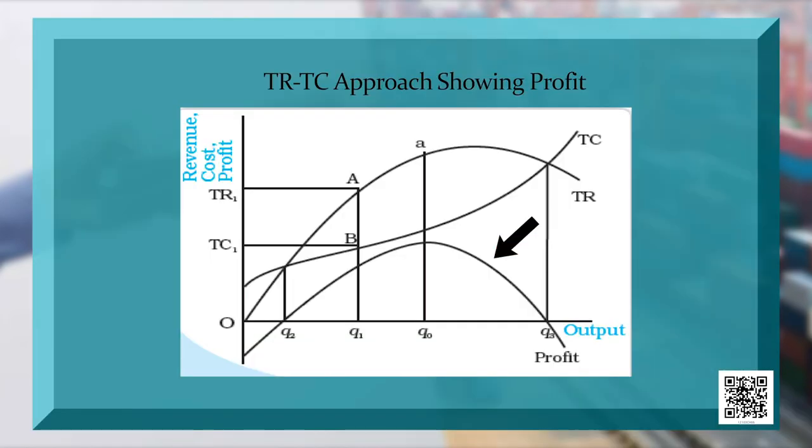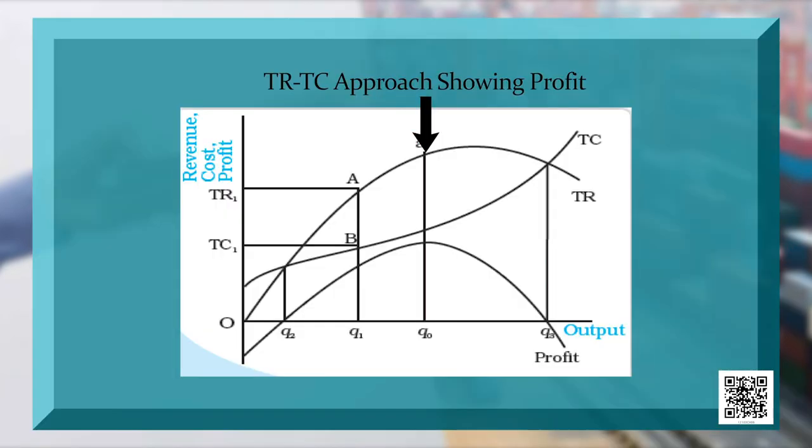But from point Q2 to point Q3, there is profit because TR exceeds TC, meaning the firm is earning more by selling a commodity than the cost incurred in production. At point Q0, profit is maximum as the gap between TR and TC is maximum. This situation is called producer equilibrium — where the difference between TR and TC is maximum, the producer attains maximum profit and tries to remain at that point.